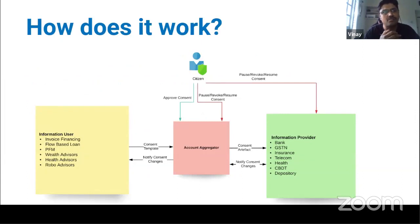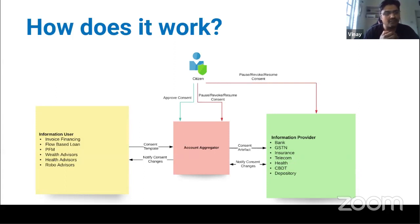In this ecosystem, information users — whether invoice financing, flow-based loans, PFM, wealth advisory, balance checking, or robo advisors — sit on one side. Information providers sit on the other. In the middle is the account aggregator, which validates consent. The citizen is empowered: all details and their granularity are shown, and the citizen can always revoke consent. For example, if I've given consent for frequent data pulls, I can go to an account aggregator and revoke it anytime.